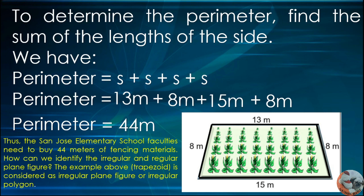Thus, the San Jose Elementary School faculties need to buy 44 meters of fencing materials. How can we identify the irregular and regular plane figure? The example above, a trapezoid, is considered as an irregular plane figure or irregular polygon.